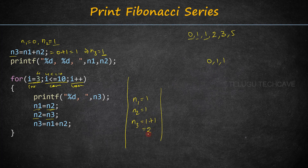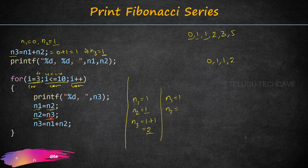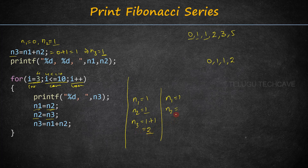Next, n1 is equal to n2 — n2 value is 1, so n1 becomes 1. Then n2 is equal to n3 — n3 value is 2, so n2 becomes 2. Then n3 is equal to n1 plus n2, so 1 plus 2 is 3.